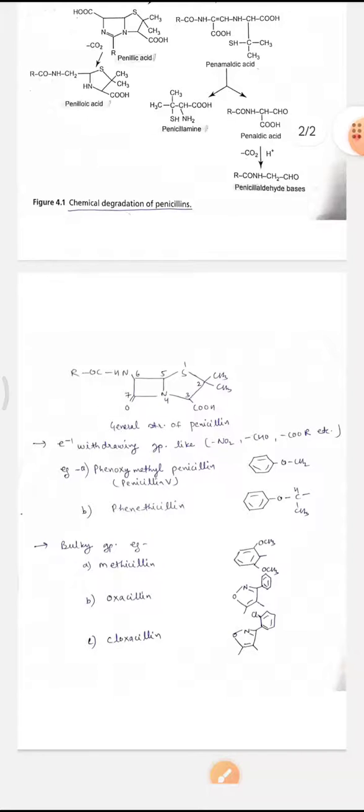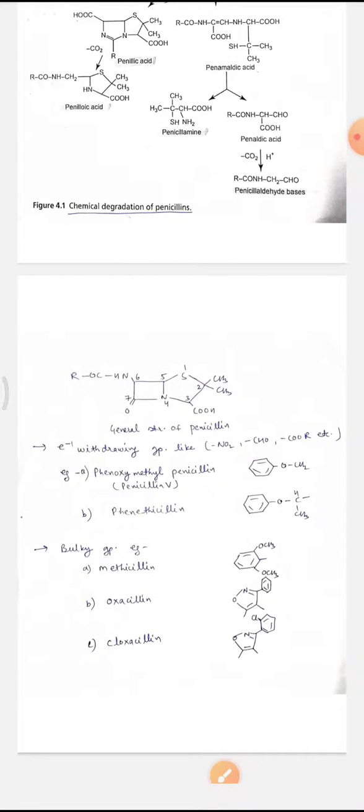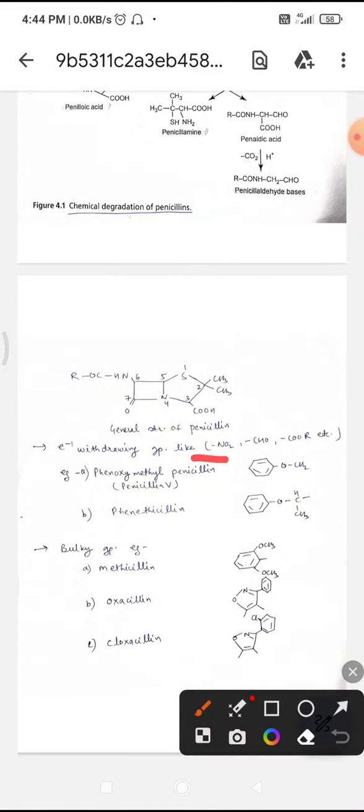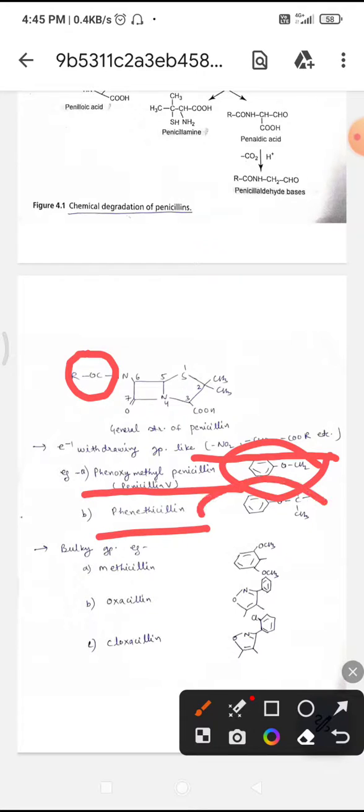Substitution of electron-withdrawing groups, for example NO2, CHO, or COR groups, in the alpha position of the acyl group increases the resistance to acid hydrolysis and enhances stability by decreasing nucleophilicity at the carbonyl oxygen. For example, phenoxymethyl penicillin or penicillin V have this group, and phenethicillin has this group in the structure.